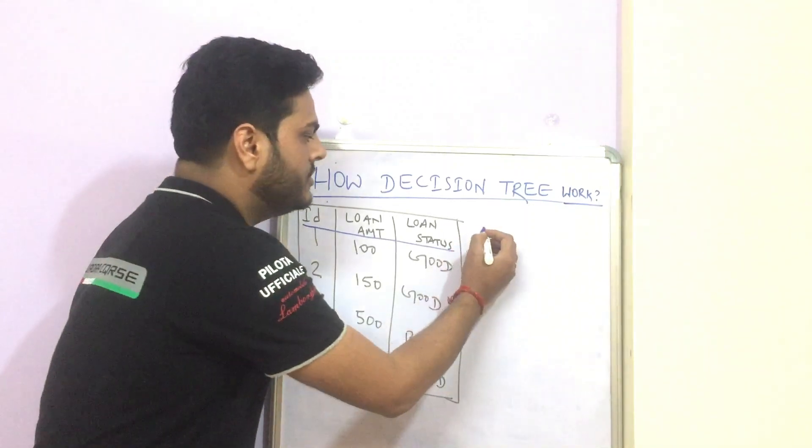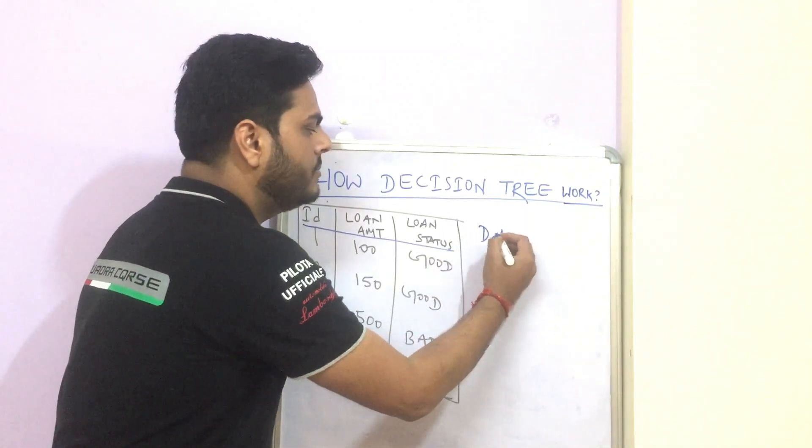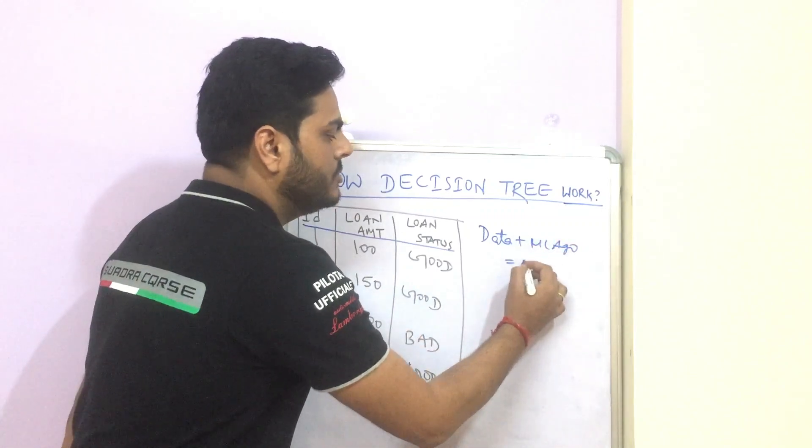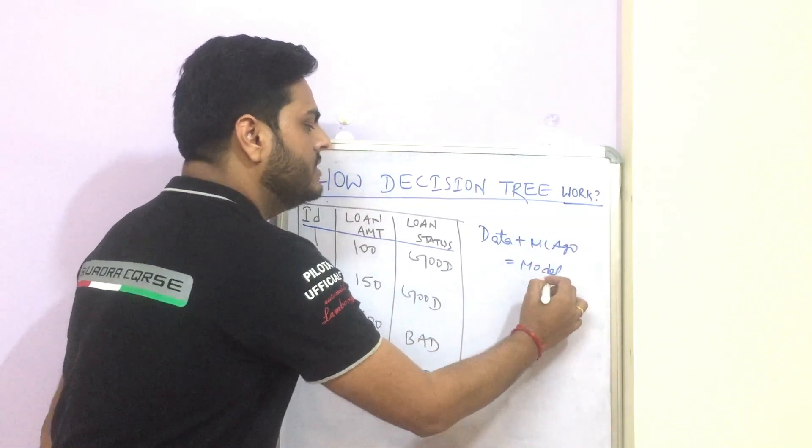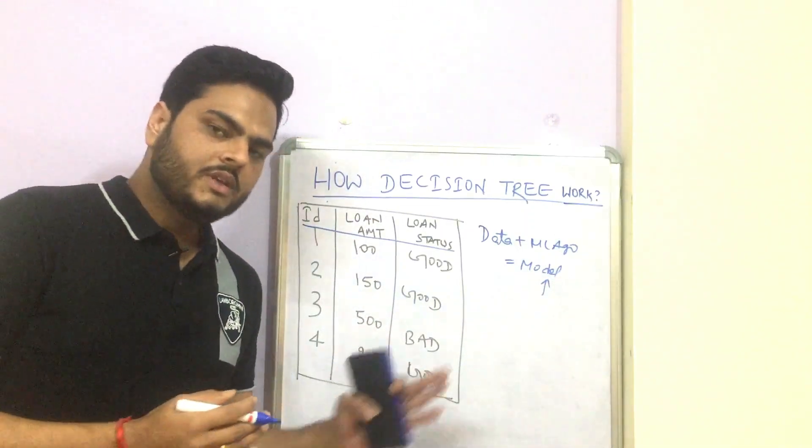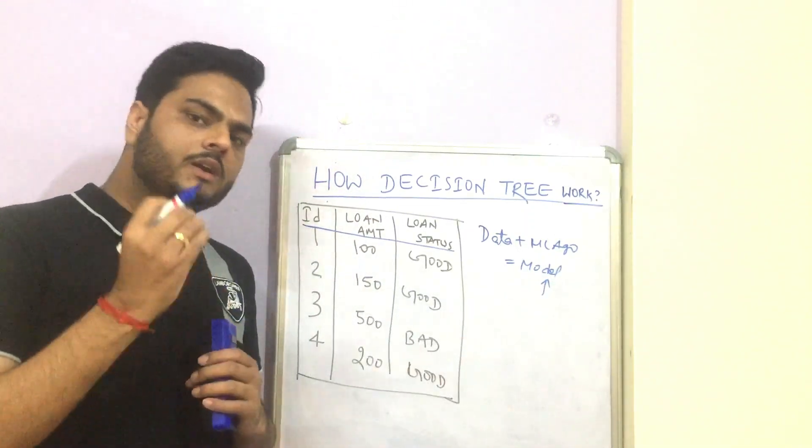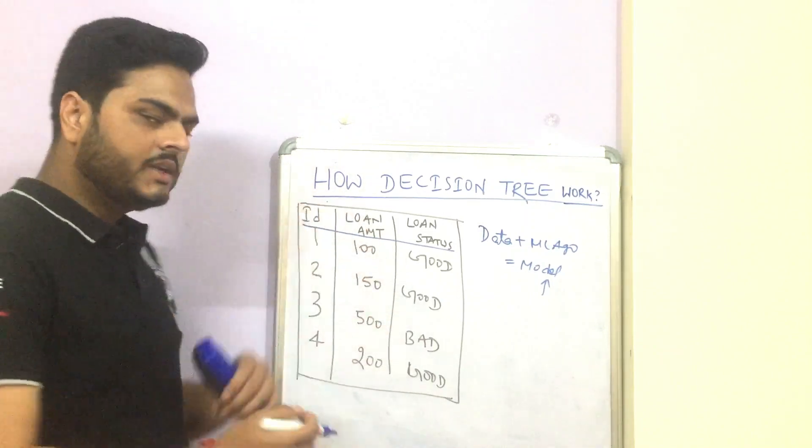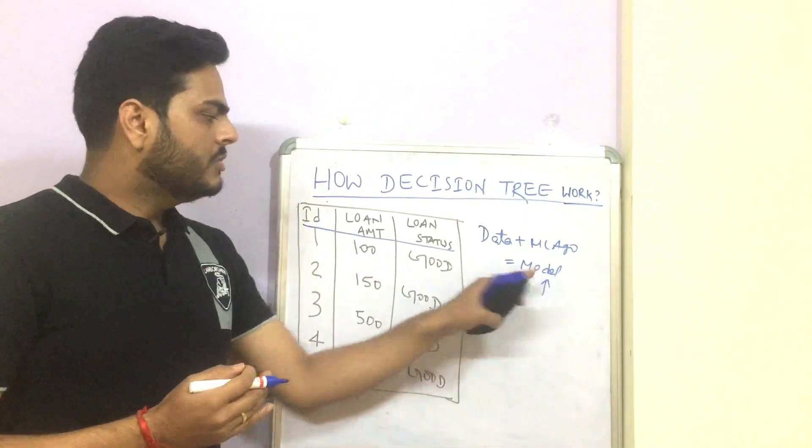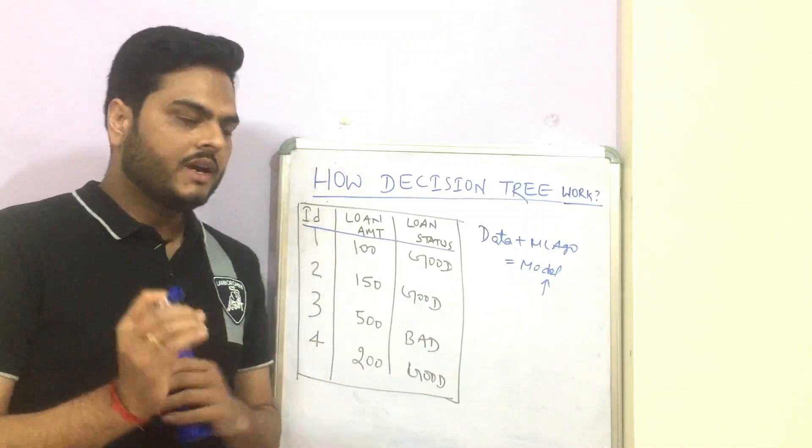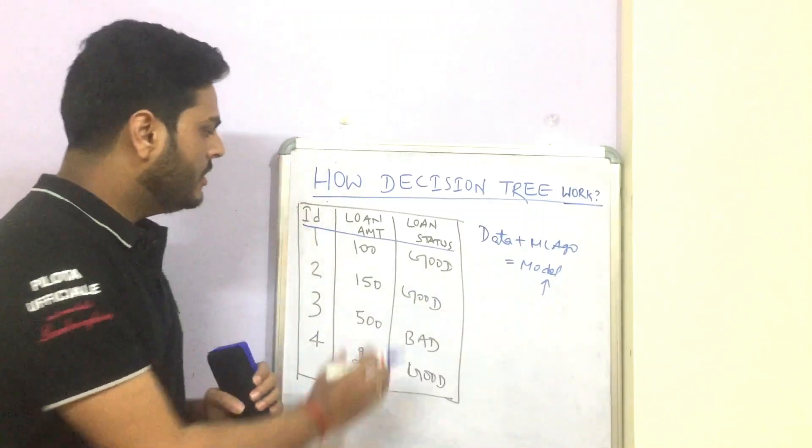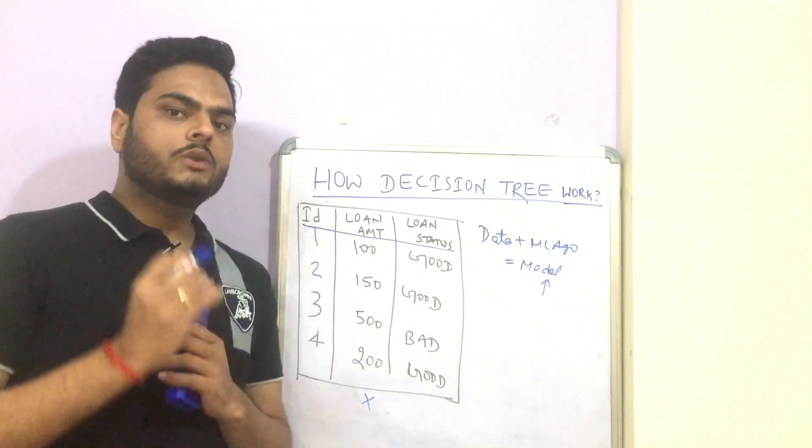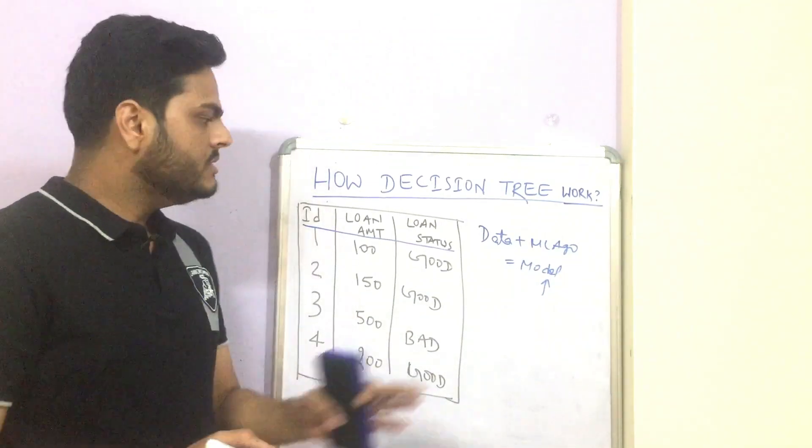So typically how it works is data plus machine learning algorithm equals model. So what is this model? This model is an entity which has learned the pattern from the data. So if I create a model from this data, then tomorrow this model can answer my question. If I ask this model, hey, the loan amount is X, could you tell me whether this loan would be a good loan or bad loan? So that is the use of this model.